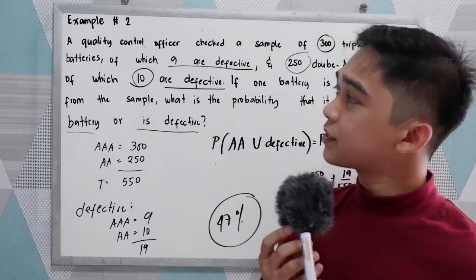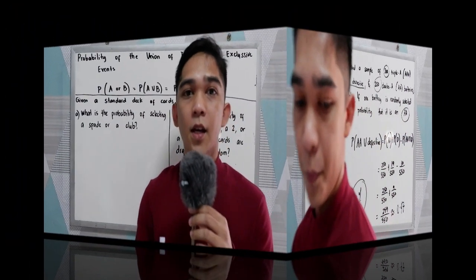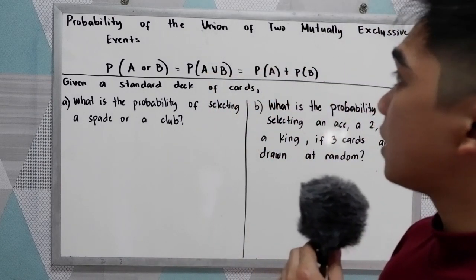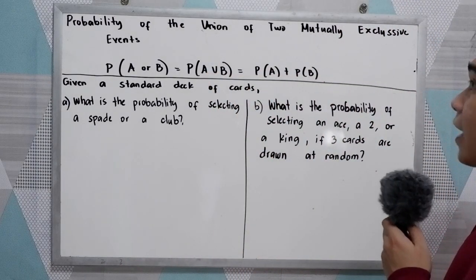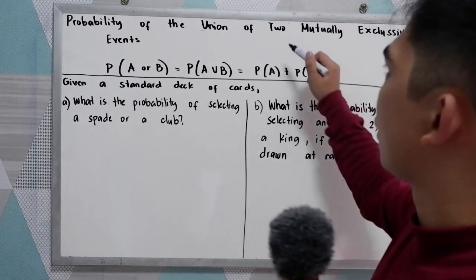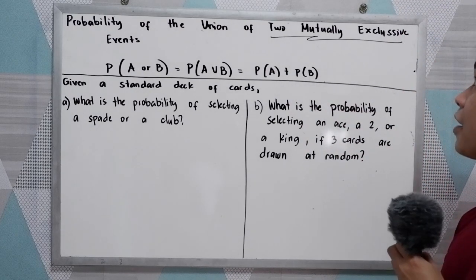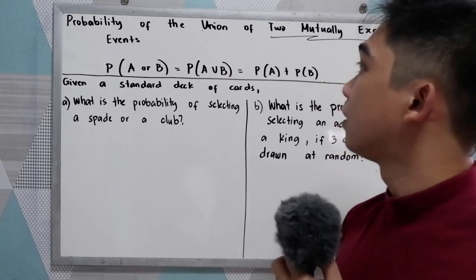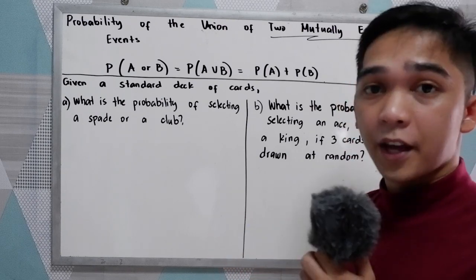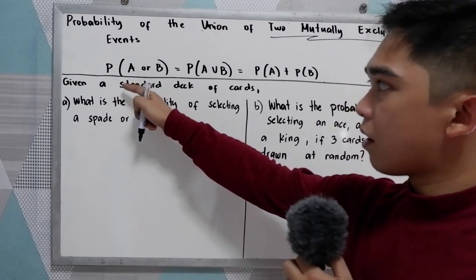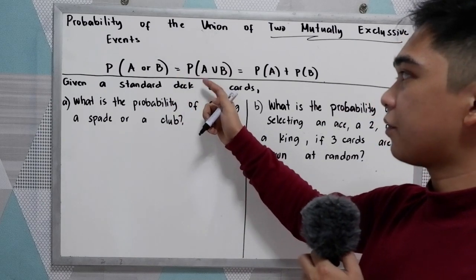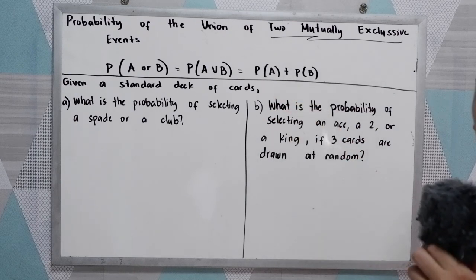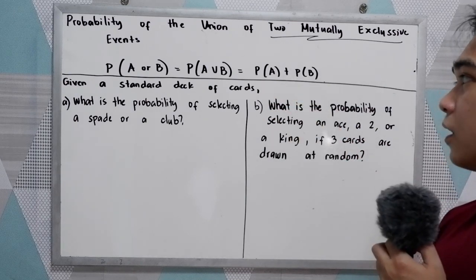That is the application of the probability of the union of two events. Let's have our second rule — the probability of the union of two mutually exclusive events. We have two events that are mutually exclusive, meaning there is no intersection. So the probability of A or B equals the probability of A plus the probability of B.